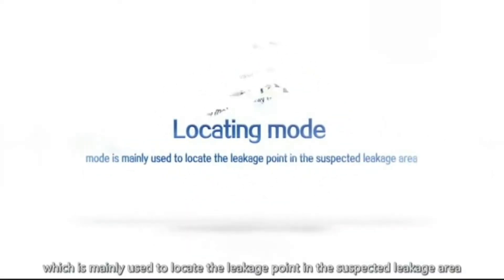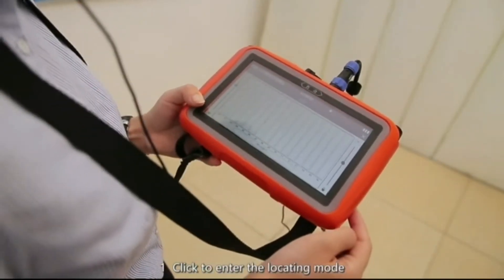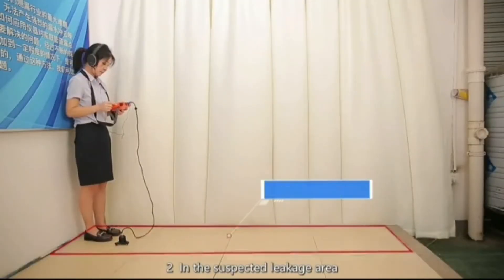Locating mode, which is mainly used to locate the leakage point in the suspected leakage area. 1. Click to enter the locating mode. 2. In the suspected leakage area, start detection from the first point.